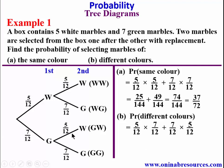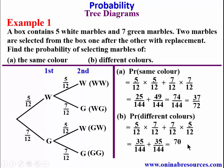Simplifying: this gives 35/144 plus 35/144, which gives 70/144. Dividing by 2 gives 35/72 in simplest form. So with this, we have done justice to Example 1.